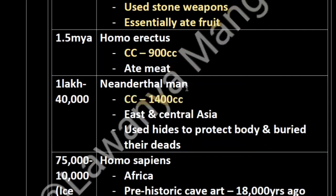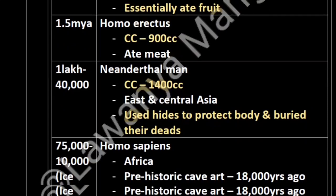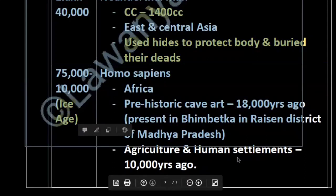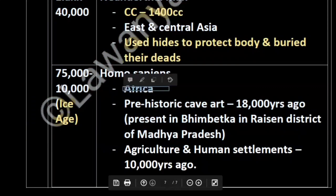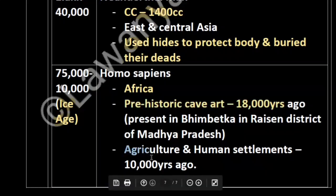100,000 years ago came Neanderthal man. Their cranial capacity was 1400 cc — this is the maximum cranial capacity. They lived in East and Central Asia. Their characteristic features: used hides to protect their body and buried their dead. Then Homo sapiens originated 75,000 to 10,000 years ago during the ice age, originating in Africa.